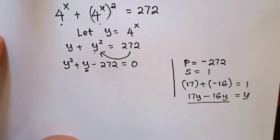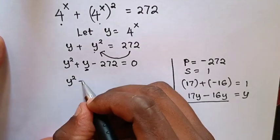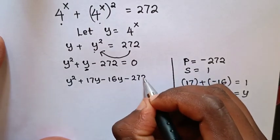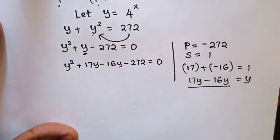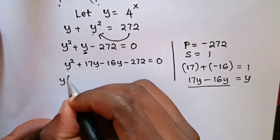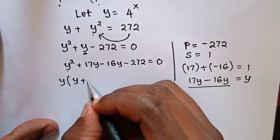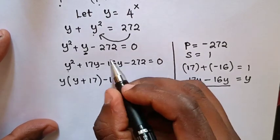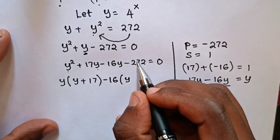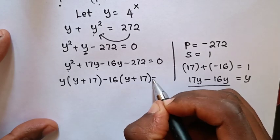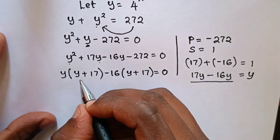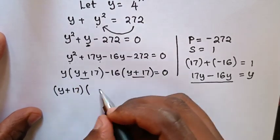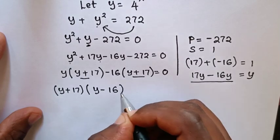So our equation becomes y squared plus 17y minus 16y minus 272 equals 0. Here y is common, so we factor out y to get y times (y plus 17). Then negative 16 is common, giving minus 16 times (y plus 17) equals 0. So the factored form is (y plus 17)(y minus 16) equals 0.